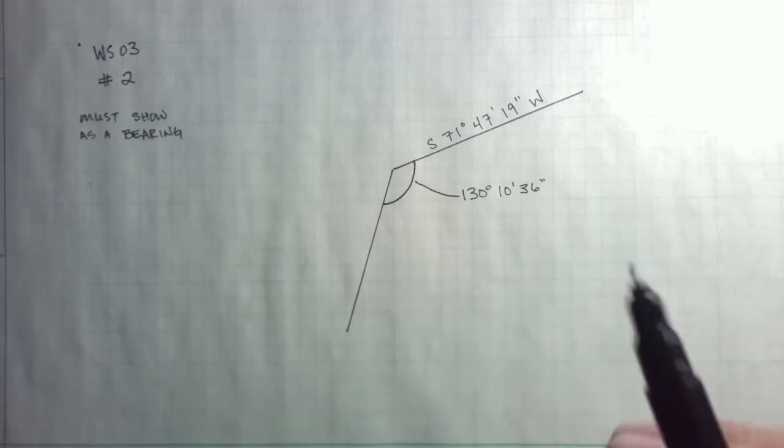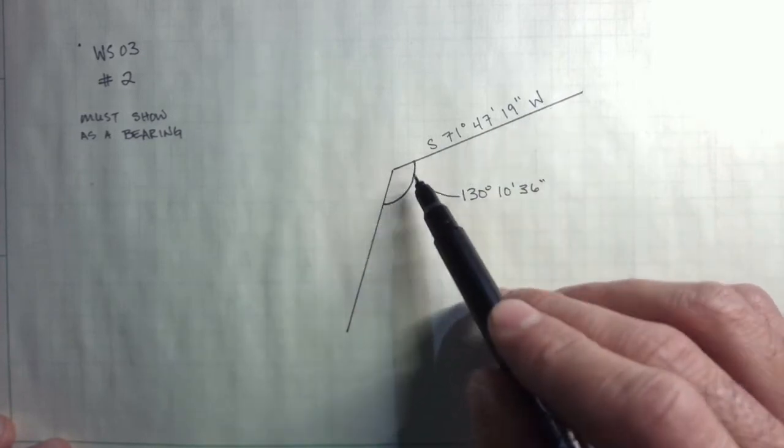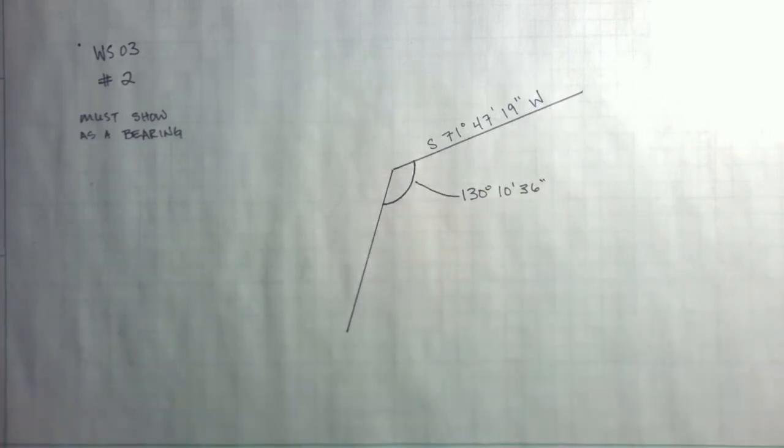We don't have a whole lot to go off of here, except this line. We have a bearing, and we have the angle between those two lines. And that's enough to start. So the first thing I like to do, of course, is draw a picture.